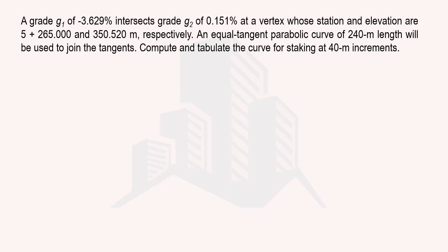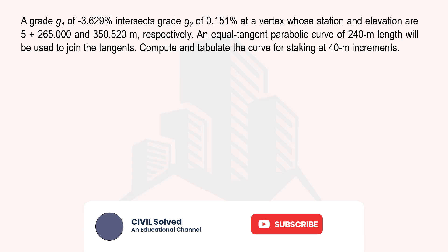This is the statement of the example that we want to solve. We can see that two grades are given: g1 and g2. G1 is negative and g2 is positive, so a negative gradient meeting with a positive gradient means the type of curve would be a sag or valley curve. We are given the station and elevation of the vertex point, and the type of vertical curve is an equal tangent parabolic curve having a length of 240 meters. It is asked to determine and tabulate the curve for staking at 40-meter increments.